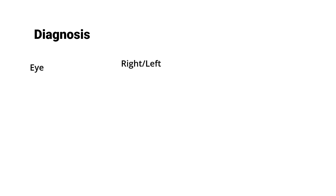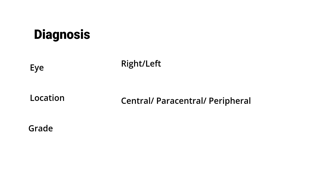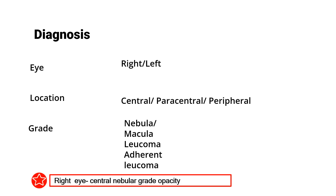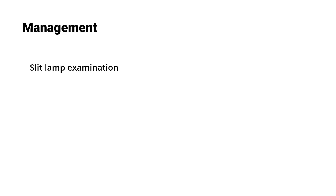For the diagnosis, after describing all findings, state: the eye (right or left), the location of the corneal opacity (central, paracentral, or peripheral), and the grade of opacity (nebula, macula, leucoma, or adherent leucoma). For example: right eye central nebular grade corneal opacity, and you can mention the size if you are certain — for example, 5 by 5 millimeters.